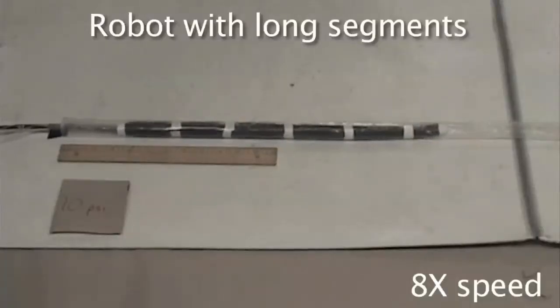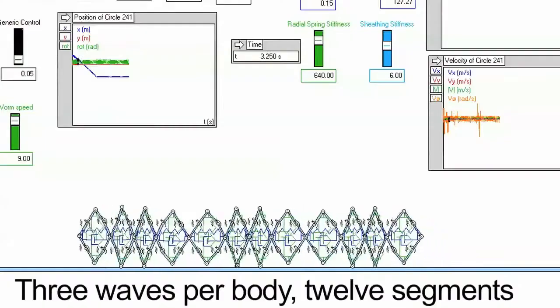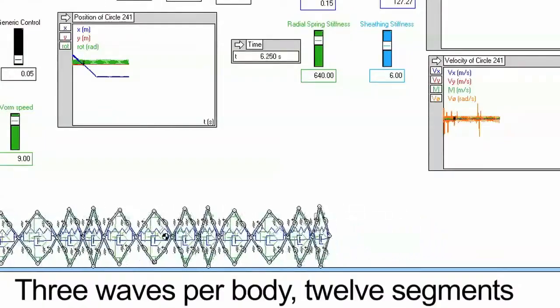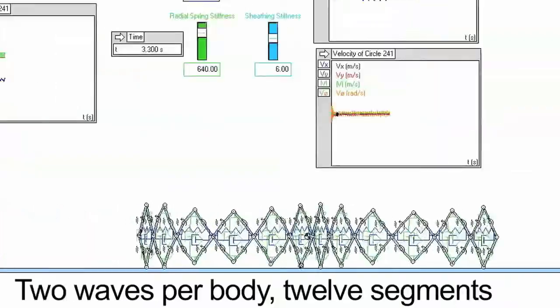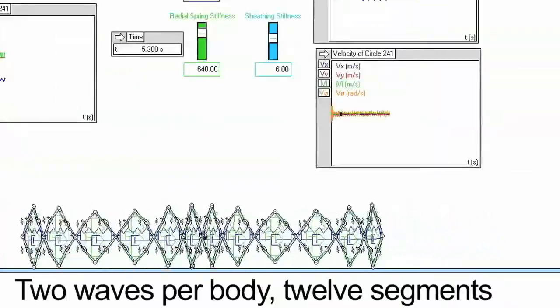Most worm robots, including our early prototypes, use large discrete actuators linked in series. Our new analytical model, along with 2D simulations, revealed problems with both the kinematics and dynamics of the traditional segmented approach.